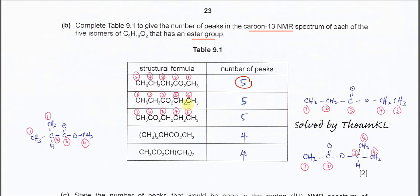For the second isomer, the non-equivalent carbons are 1, 2, 3, 4, 5 — so you see 5 peaks. Do not think that carbons 1, 2 and 4, 5 are equivalent, because there is a COO ester group in between. So the first two and last two carbons are not equivalent, giving 5 peaks.